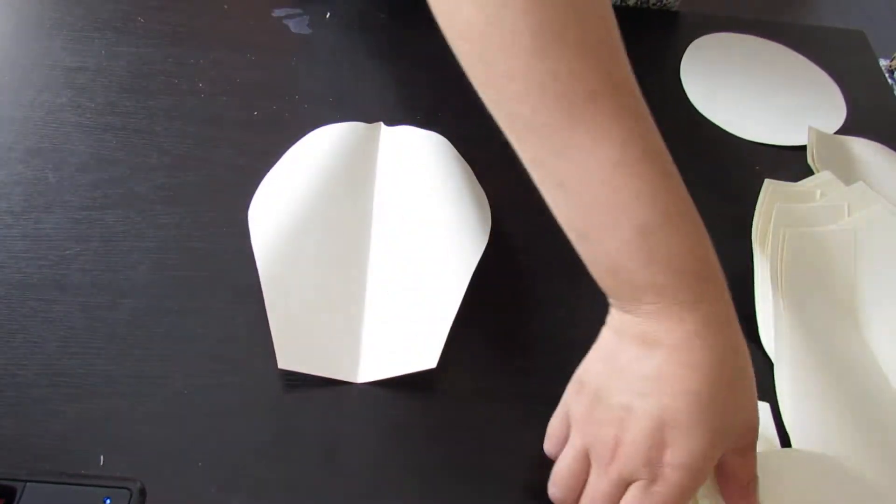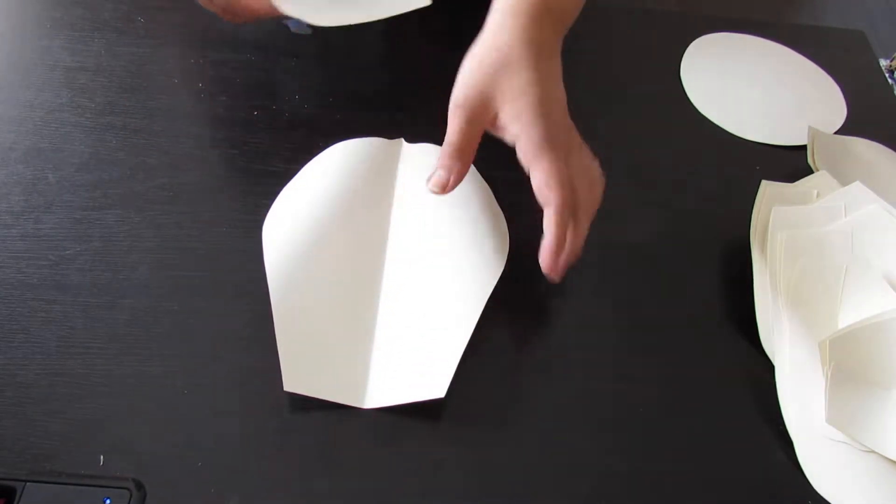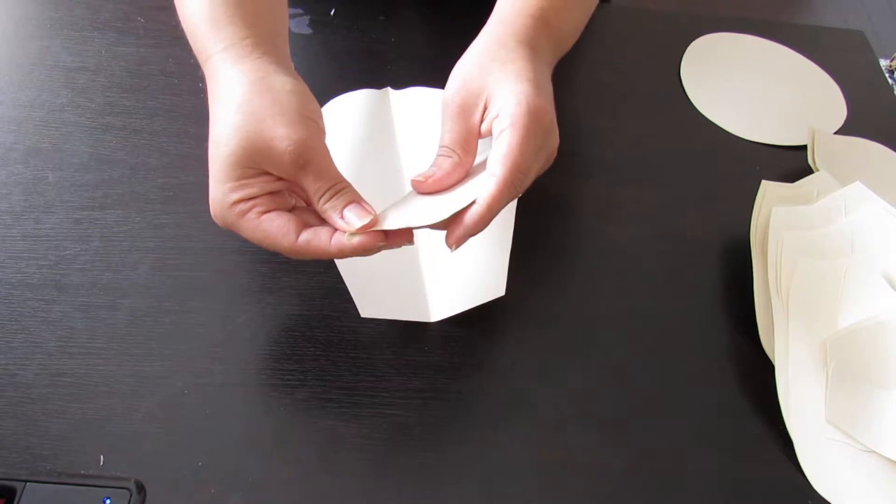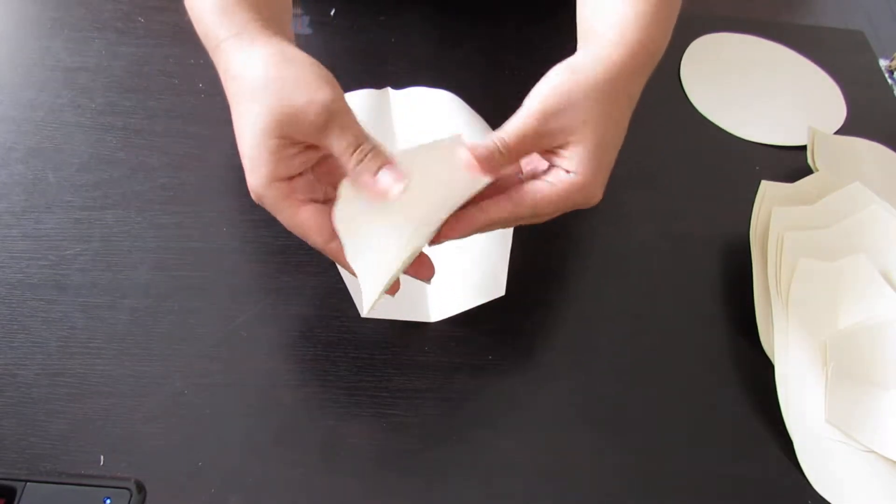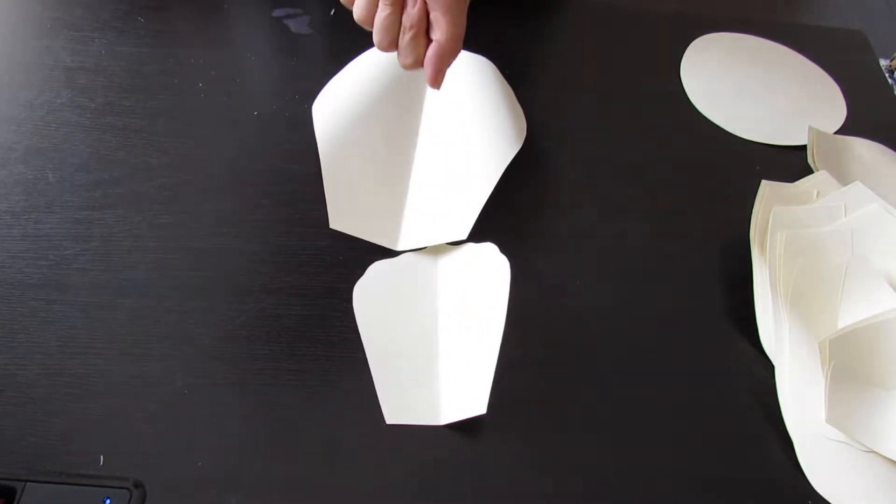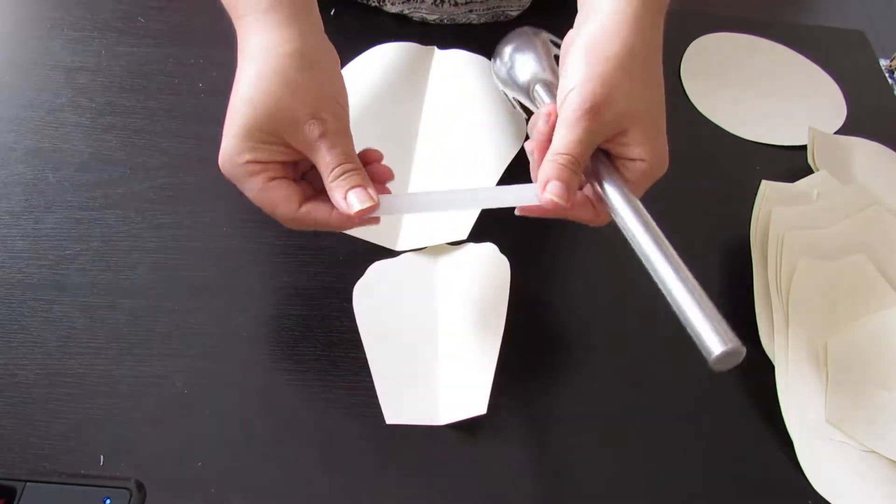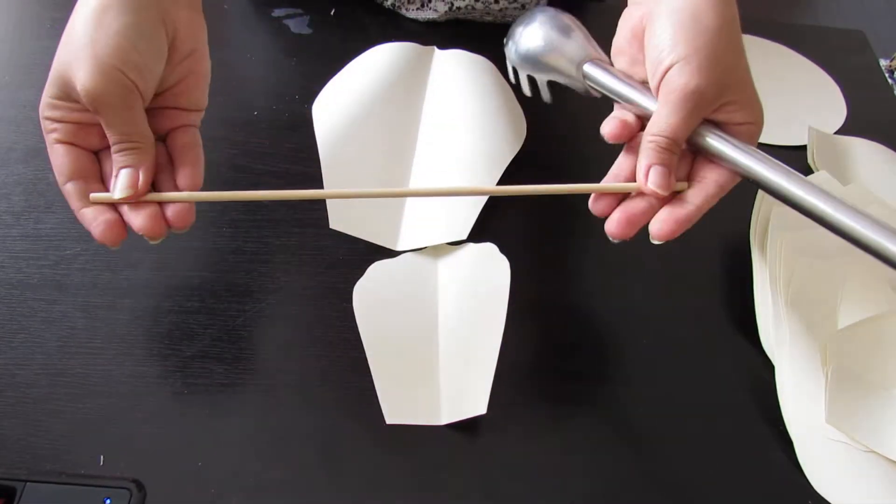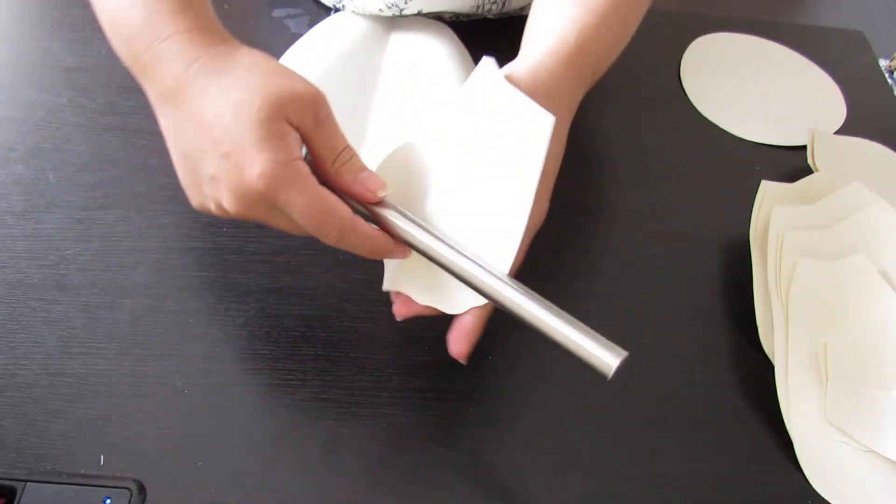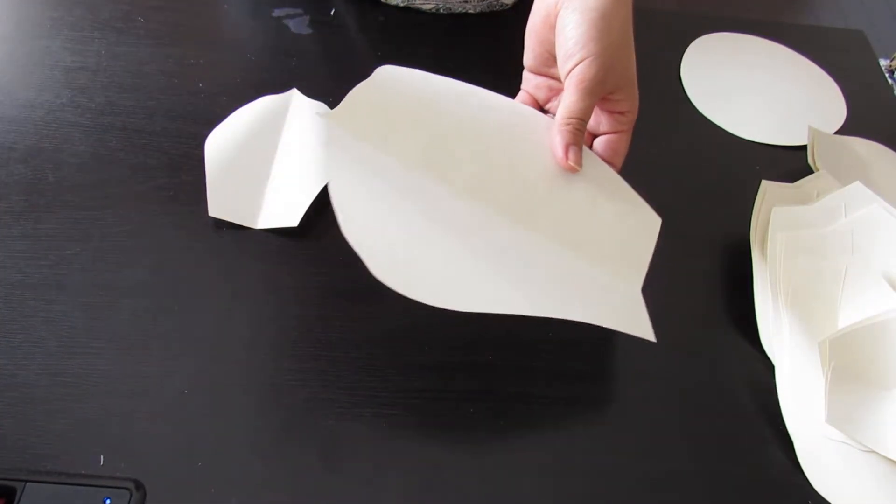Once you have those all cut and traced, which I already have just for time purposes, we're going to prep all your petals. See how we have creased it in the middle? That's what we're going to do. You're just going to grab your petals and fold them in half. Don't have to be exactly perfect, just to give it a little look on this style. Then what you're also going to need is something to curl with. I like to use my spaghetti utensil. You can use a glue stick or wooden dowels. I'm just going to give my ends a curl, so they're going to look like this.